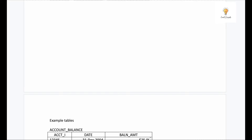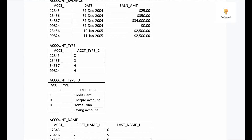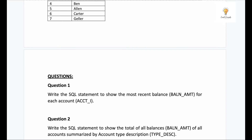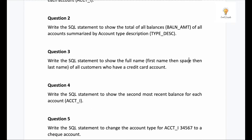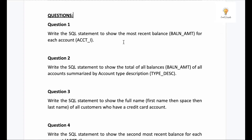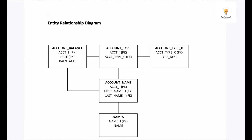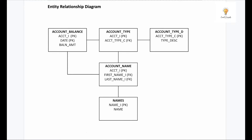Let me give you an overview. This is the entity diagram — these are all the tables and I'm going to show you the kind of data they have. There are five SQL questions and in each video I will be solving one. So in this video I will be solving this query. There are a total of five tables: account balance, account type, account type D, account name, and names. There are lines between them indicating connections via primary key. These two tables are connected, these two are connected, these two are connected — but some tables aren't connected because there are no lines between them.